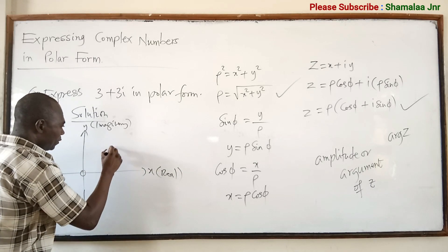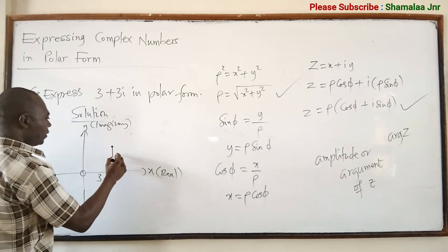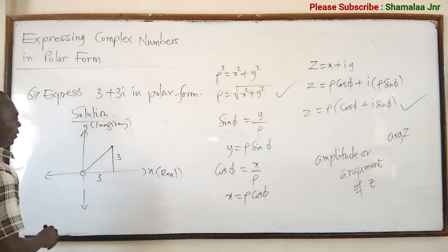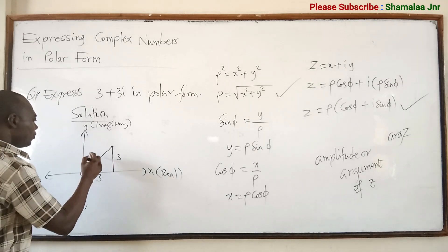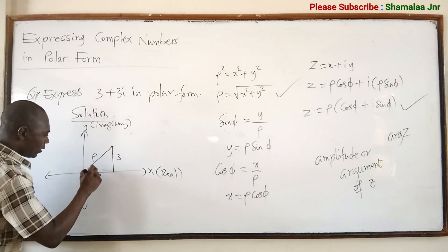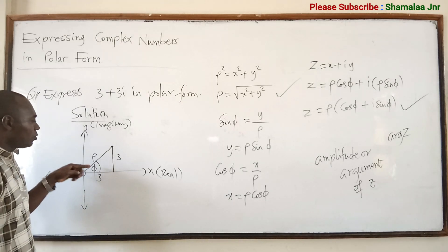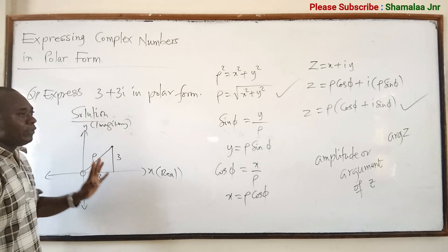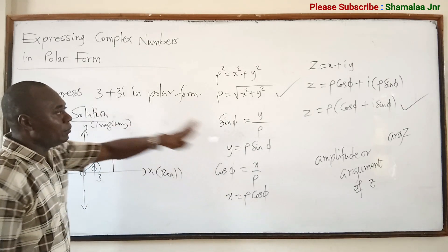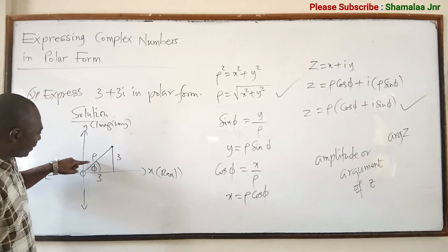So the point is at x equals 3 and y equals 3. Let's call the angle phi. If you can get the values of rho and phi, you can easily write the complex number in polar form.